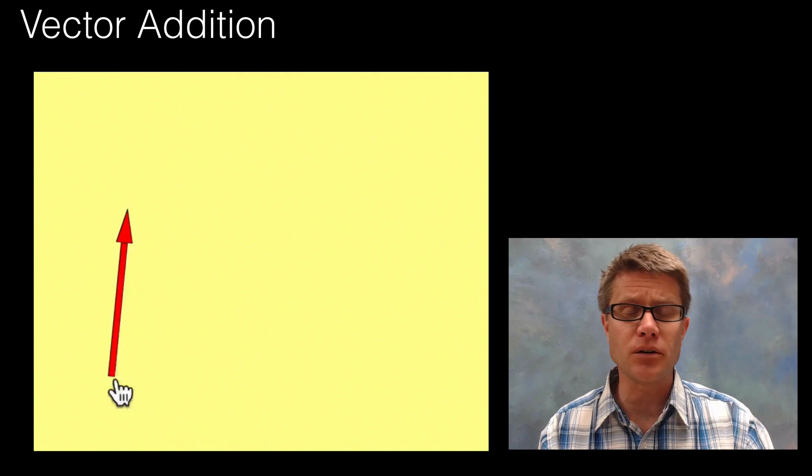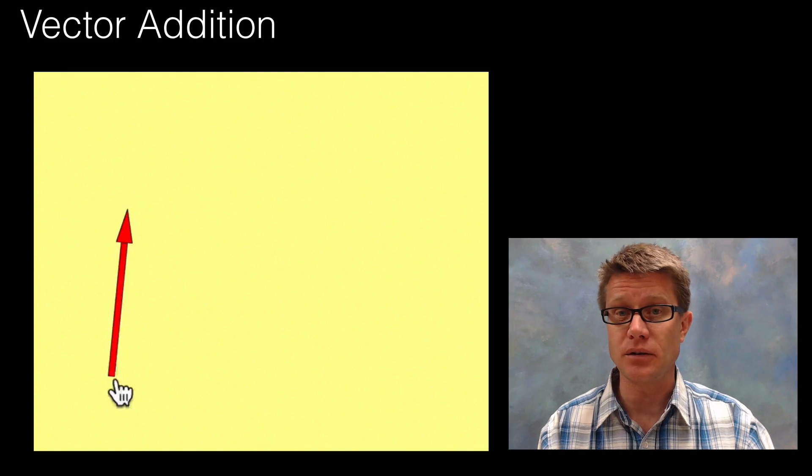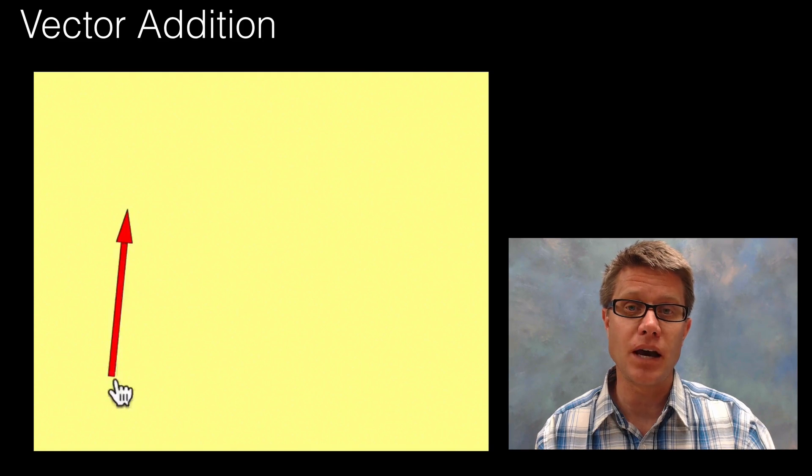So remember, a vector not only has magnitude, so magnitude of the electric field, but it also has direction. The magnitude is the length and then the direction is which way that arrow points.